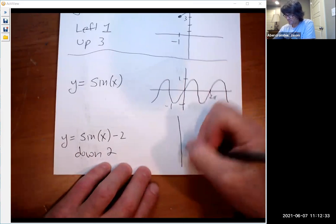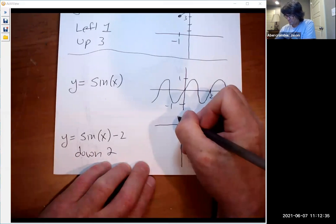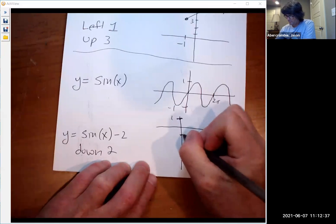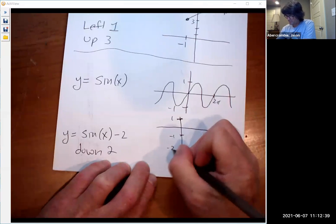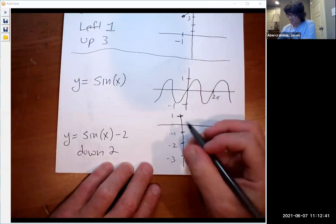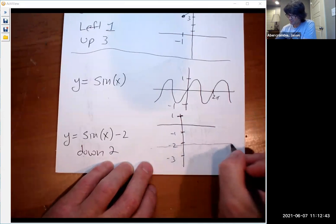If you did y equals sin x minus 2, that would be down 2. And your new graph would look like this. Say here's 1, minus 1, minus 2, minus 3. Since I go down 2, my center is now kind of along negative 2.